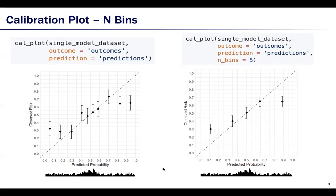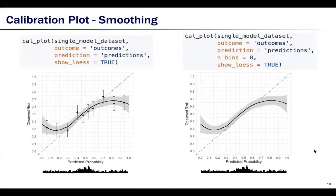Like the threshold performance plot, we put the prediction distribution at the bottom of the figure. Runway can also show lowess smoother calibration estimates. Using n_bins equals zero will remove the dots for each bin and show a smoother line only.